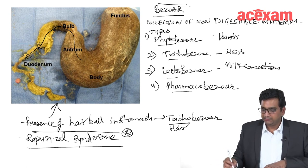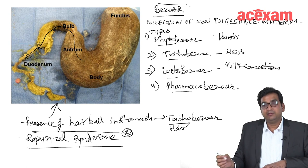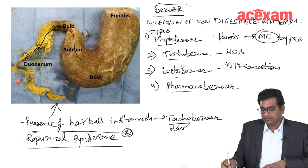Phytobezoar or the non-digestible plant materials in the stomach is the most common type of bezoar. The most common type of bezoar is phytobezoar.